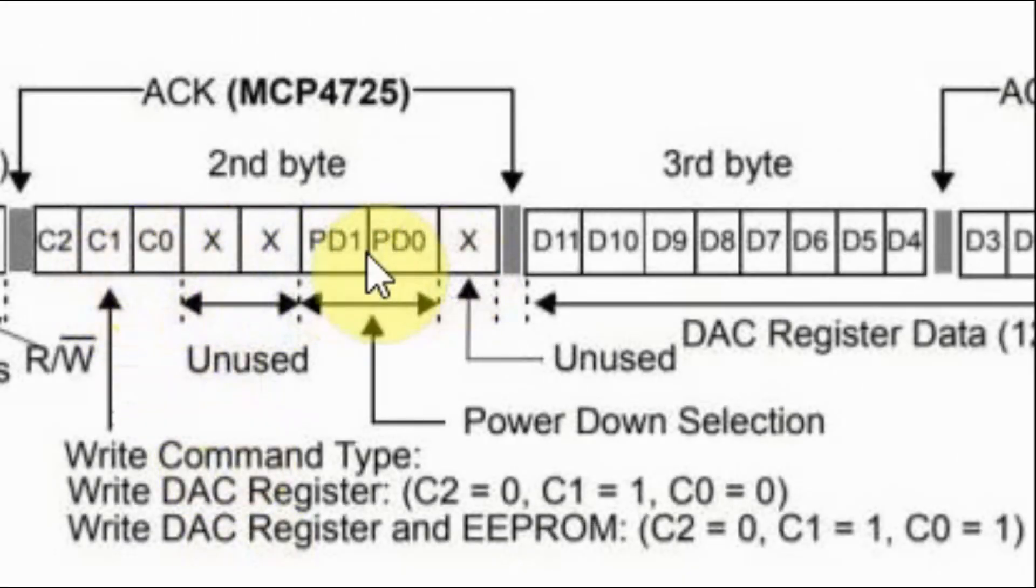The second byte we send is a command byte, which contains the configuration bits. Namely, we have the control bits C0, C1, and C2 that determine whether we are writing to the DAC register, or we are writing to the DAC register and the EEPROM. In this video, we'll be writing only to the DAC register, so the value would be 010. And these two bits here determine whether we are in power down mode, or in normal mode. Here we'll be doing normal mode, so the value is 00.